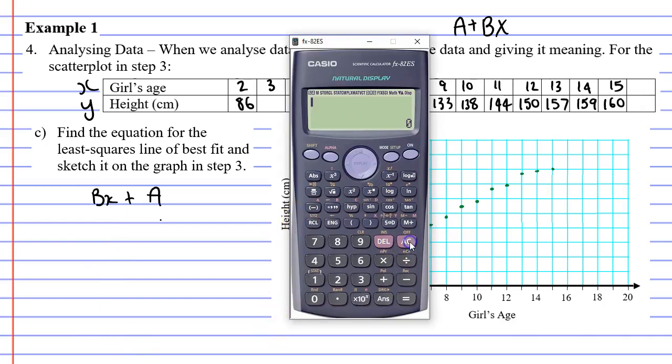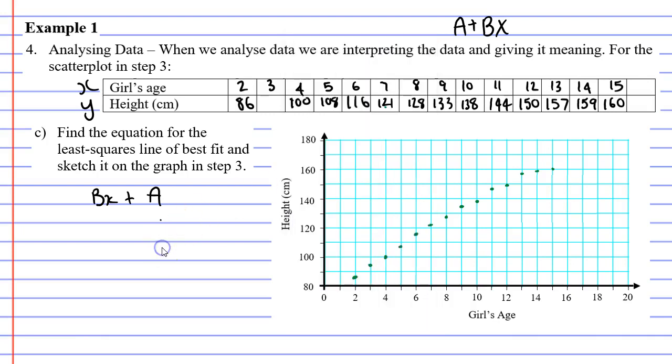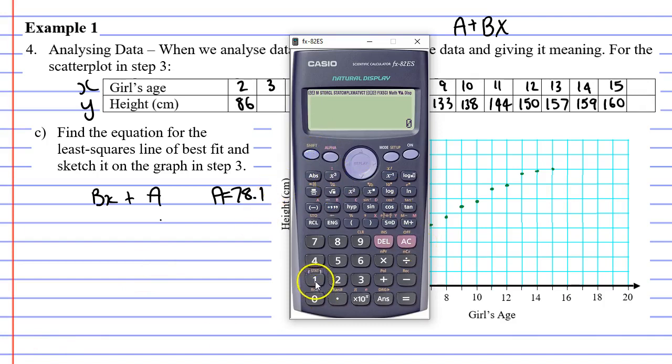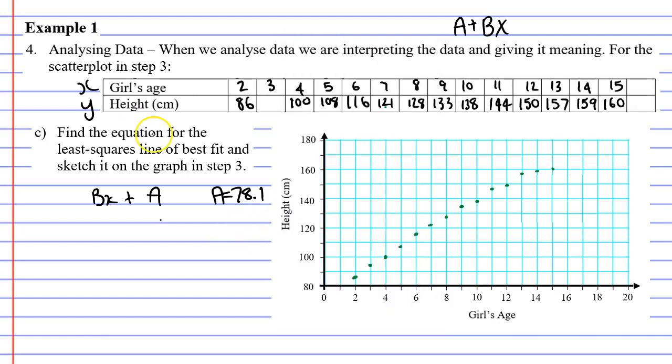And on our calculator, we're going to get out of the screen. We're going to go into stat, shift one, reg, number seven, and we're going to find A and B, so number one and number two. So we'll start with A, which comes out to 78 point, let's just make it 78.1. So A equals 78.1. And let's find B now. So shift one into stat, number seven for reg, and B is number two, which comes out to, let's go 5.9. So B equals 5.9.